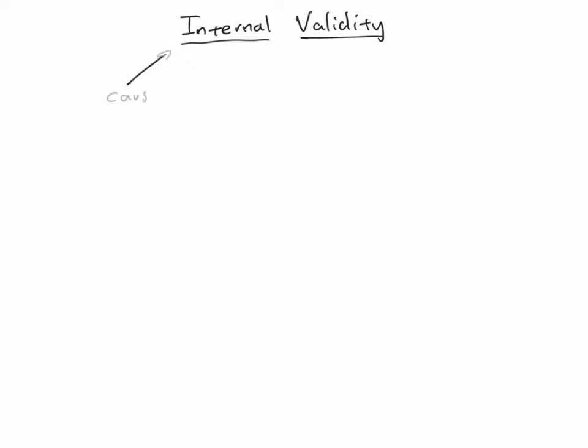Internal validity has to do with causality. In other words, this has to do with when we are doing a study where we're asking the question of whether changes in one variable are causing changes in another — not just whether the variables are changing together, not just whether there is covariance or a relationship between the variables, but whether one variable is actually causing changes in the other. The most common type of study we would do to show that one thing is causing another is an experiment. So internal validity most often comes up when you're looking at experiments and how to design an experiment well — how to design an experiment so that you are justified or correct or valid in saying that one variable is causing changes in another.